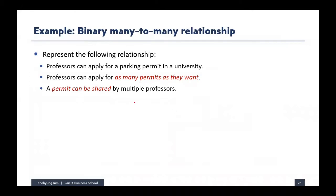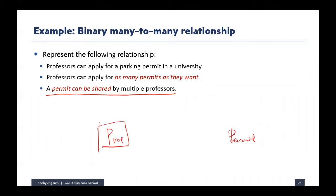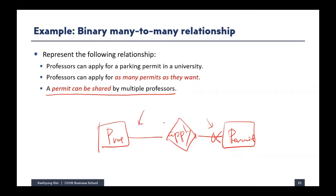For a binary many-to-many relationship: the university adds a rule that permits can be shared by multiple professors. From the professor's perspective: minimum zero, maximum many permits. From the permit's perspective: minimum one professor, maximum many professors since it can be shared. Because the maximum cardinality on both sides is many, this is a binary many-to-many relationship.